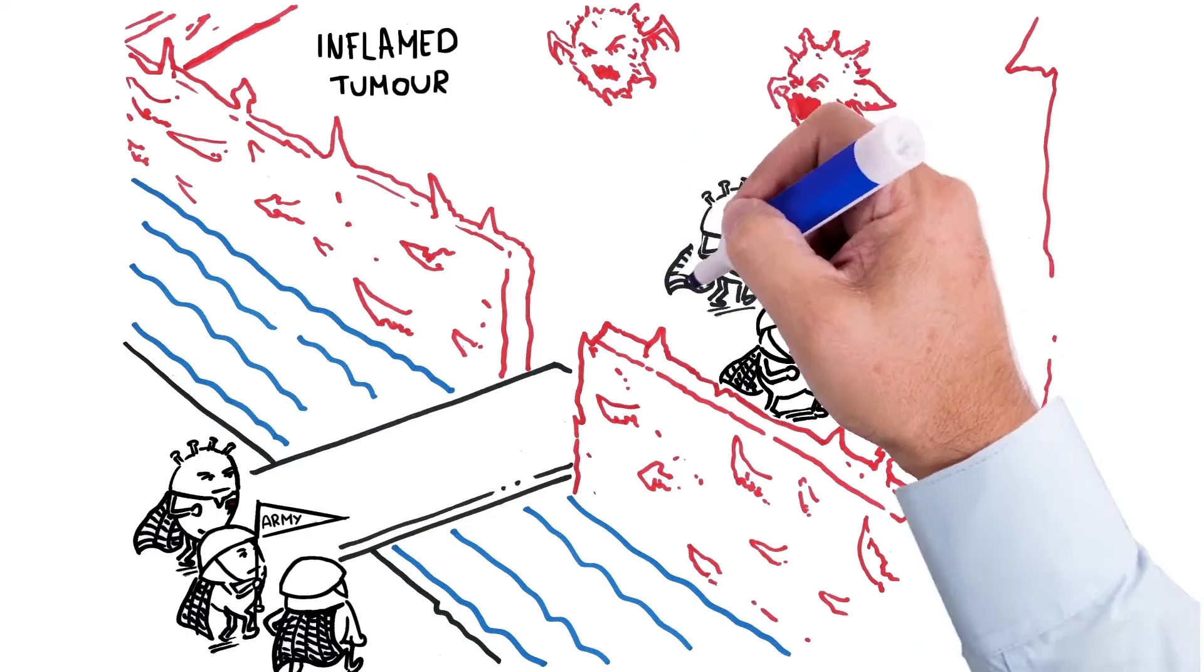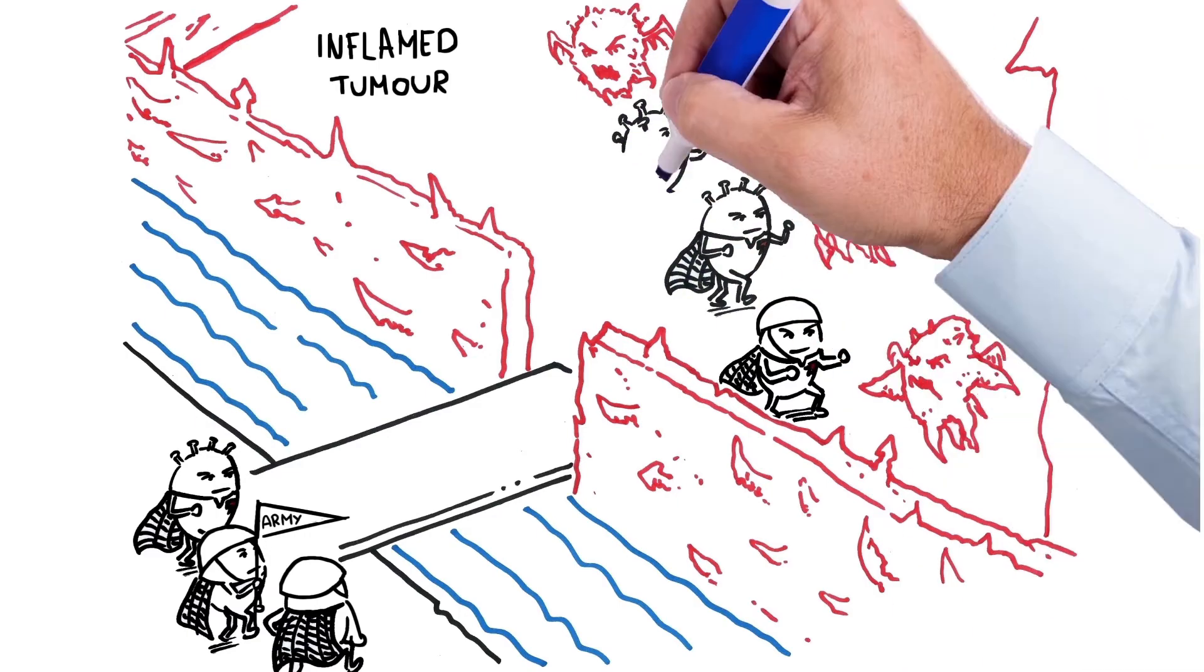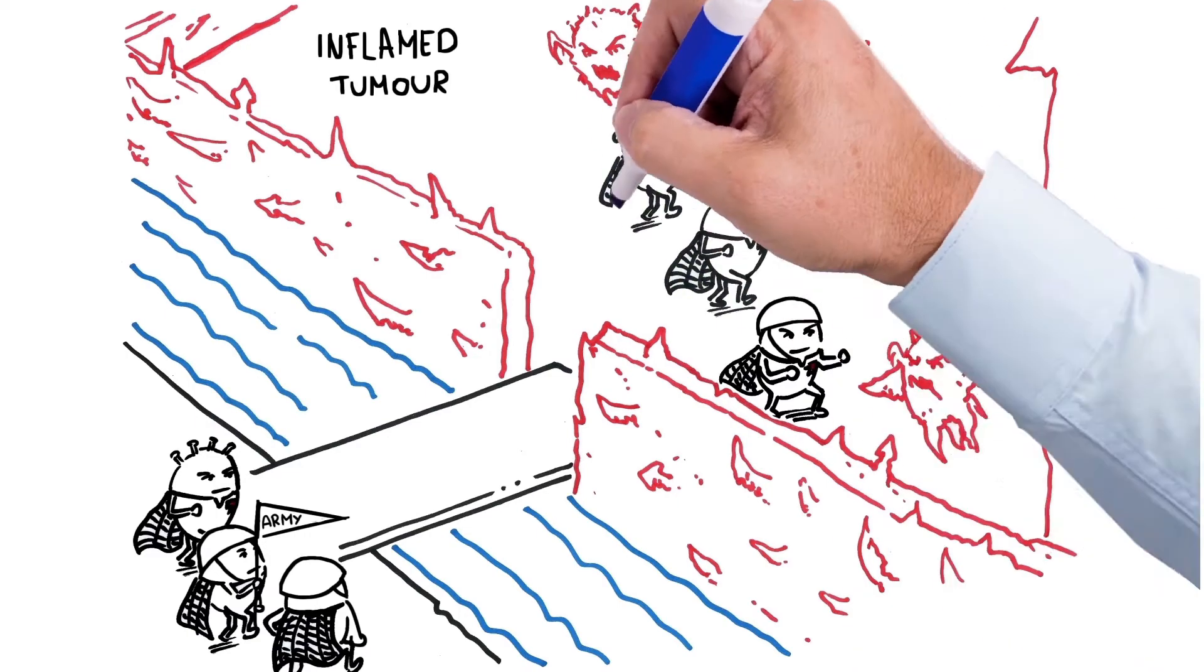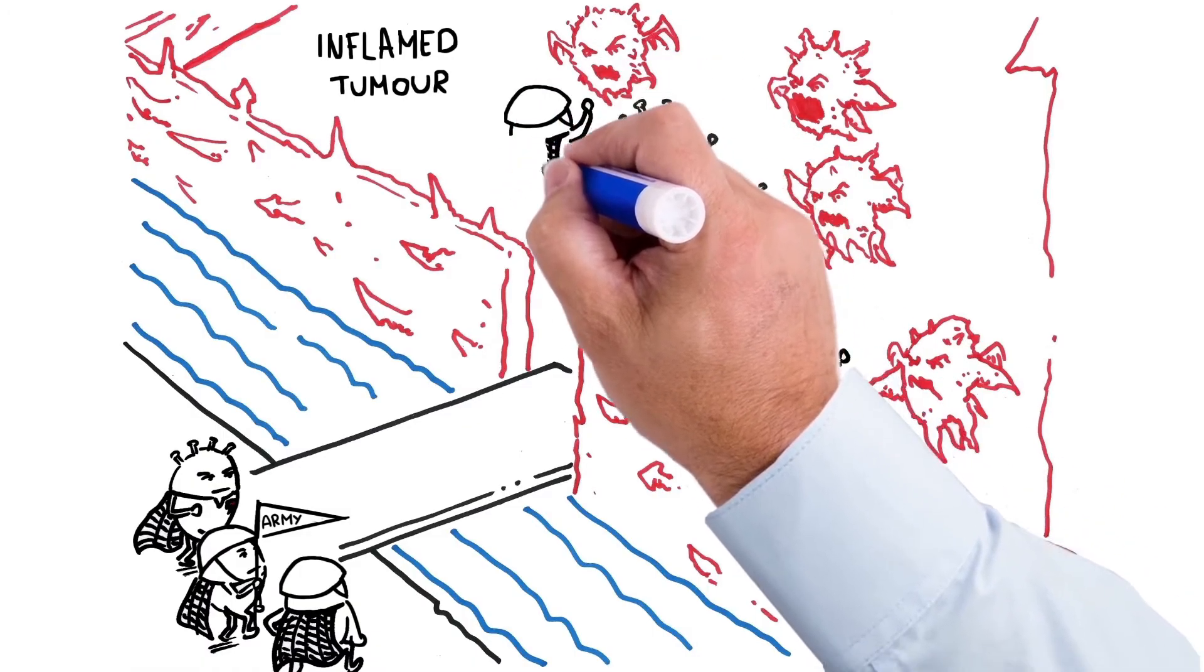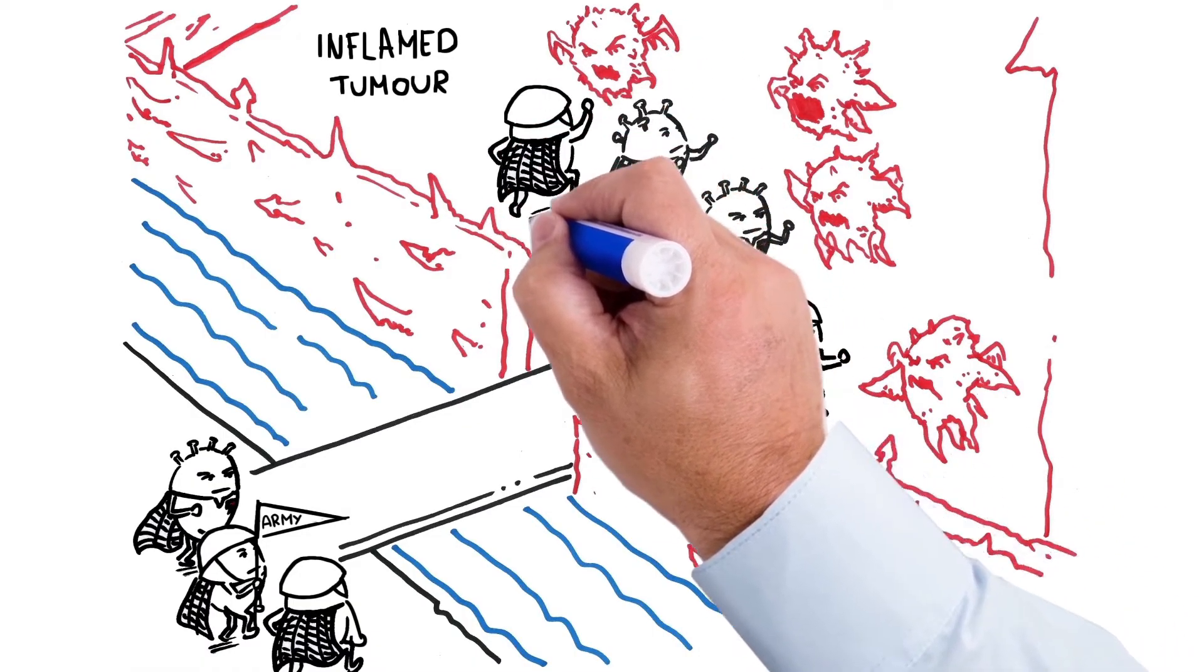When the tumor is inflamed, it has an army of T-cells armed and ready to attack the cancer from inside the castle grounds of the tumor. We call the castle grounds the tumor microenvironment.